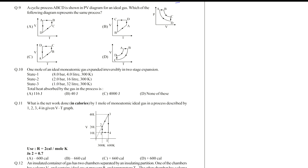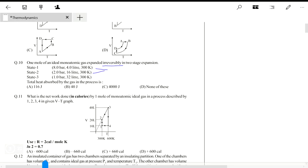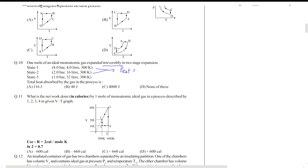One mole of an ideal monatomic gas expands irreversibly in a two-stage expansion. So we'll have to assume that it's a single-stage expansion in both cases with a constant value of external pressure. So if you have 8 bar, 4 liters, 300 Kelvin first, which then is expanded to 2 bar and 16 liters, then this takes place at a p external value of 2 bar, for which you can write work done.